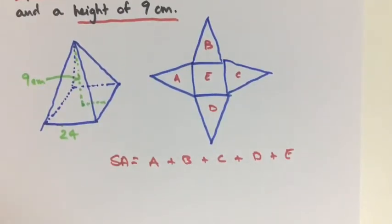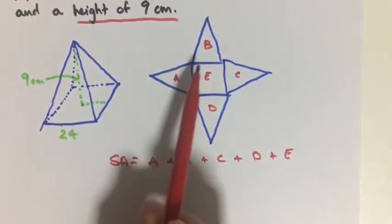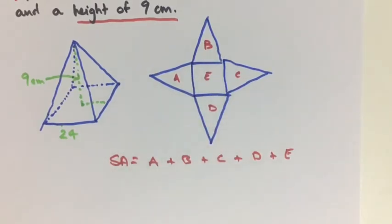Now one thing we know about this is that A, B, C, and D are all the same. They're all equal. So because of that A equals B equals C equals D.